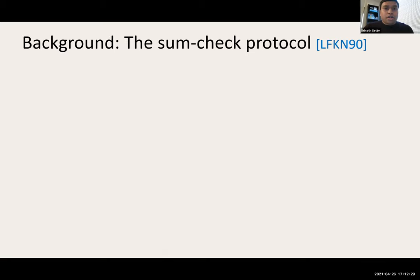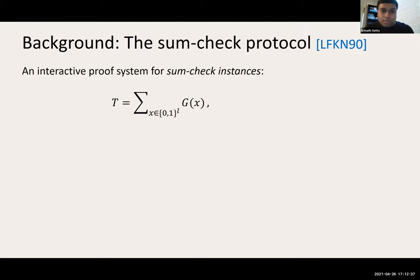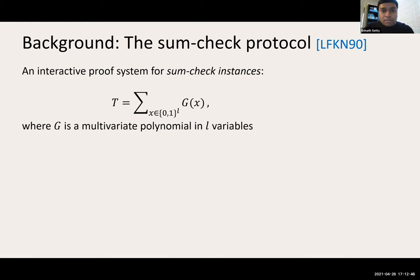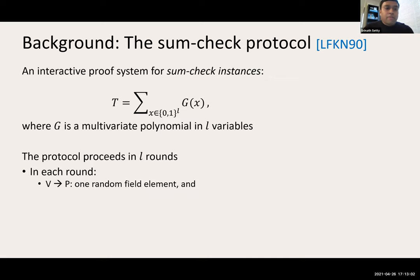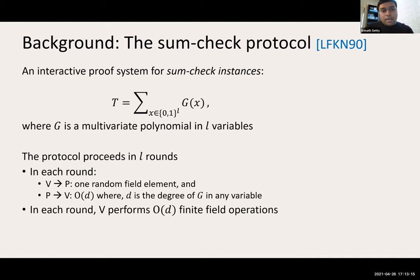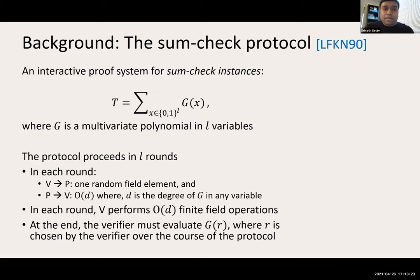At a high level, the core component inside Spartan is the sum check protocol — an interactive proof system for sum check instances for statements of the form where T is some target value and G is some multivariate polynomial in L variables. The protocol proceeds in L rounds. In each round, the verifier sends one random field element to the prover, and the prover responds with O(D) finite field elements, where D is the degree of G in any variable. The verifier performs O(D) finite field operations per round. At the end, the verifier must evaluate this multivariate polynomial at a random point chosen over the course of the protocol.